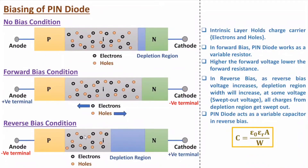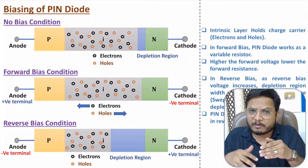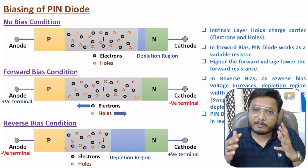In reverse bias, as you increase the voltage, depletion region width increases. At the swept-out voltage, all charge carriers are swept out. In reverse bias condition, PIN diode acts as a variable capacitor: increasing reverse bias voltage increases depletion width W, and since C = ε₀εᵣA/W, as W increases, capacitance decreases. So in forward bias PIN diode acts as a variable resistor, and in reverse bias it acts as a variable capacitor.